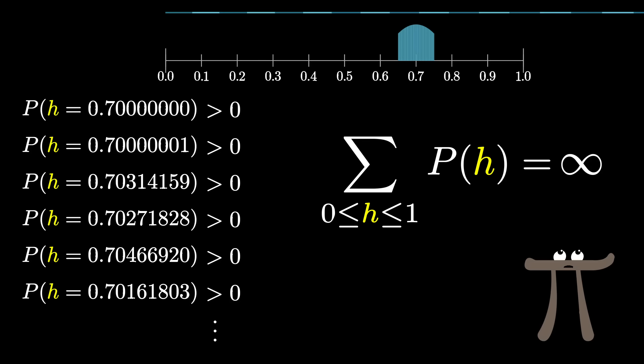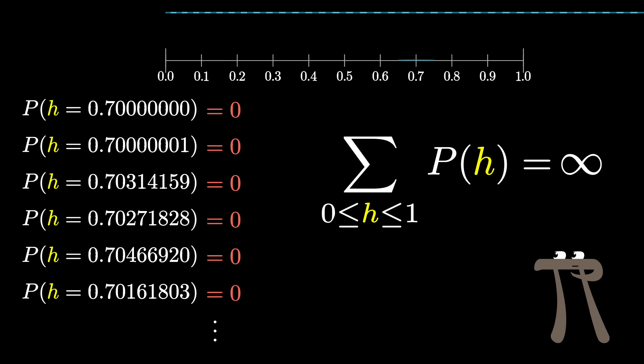On the other hand though, if all of these probabilities are 0, aside from the fact that that now gives you no useful information about the coin, the total sum of those probabilities would be 0, when it should be 1. After all, this weight of the coin H is something, so the probability of it being any one of these values should add up to 1.